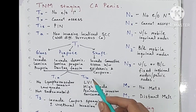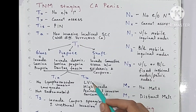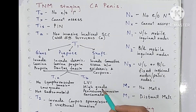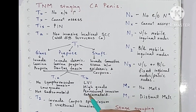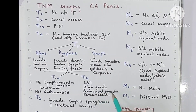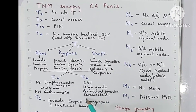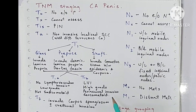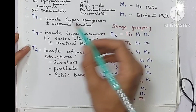In T1b there is lymphovascular invasion, it is high grade, and there could be perineural invasion and sarcomatoid cell type — that is spindle cell type.